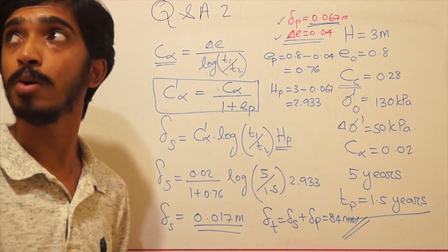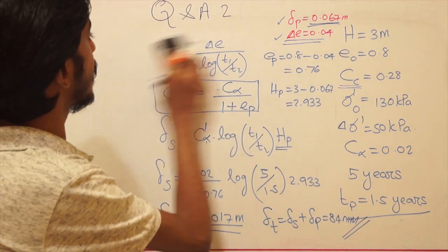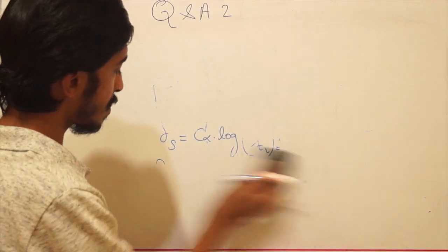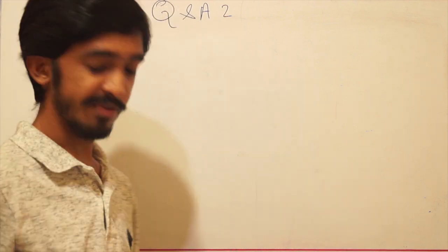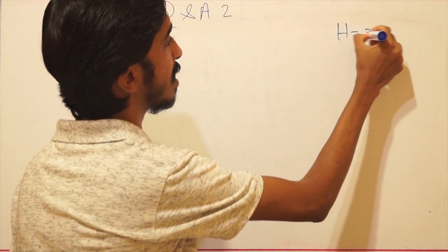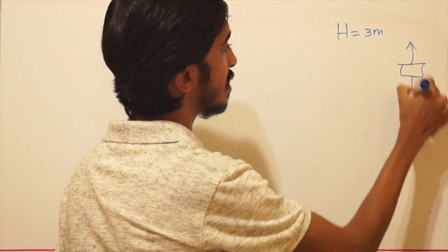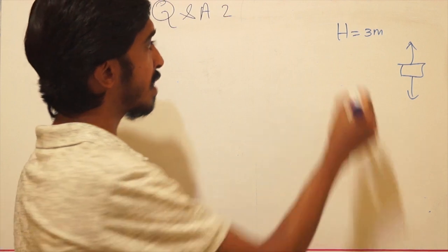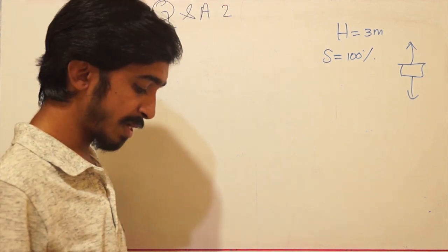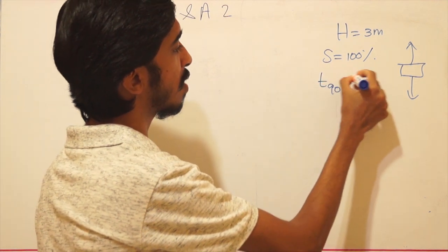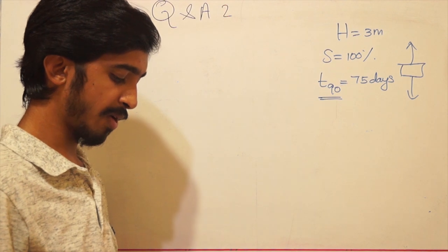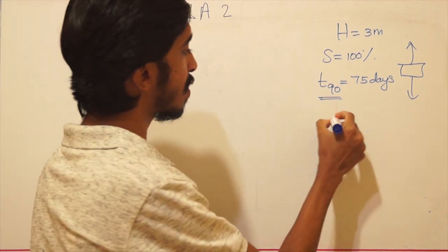Moving on to the second question, which is a fairly simple question related to time factors. A 3-meter clay layer with both-way drainage of saturated clay underwent 90% primary consolidation in 75 days. They are asking us to find the coefficient of consolidation cv for this pressure range.